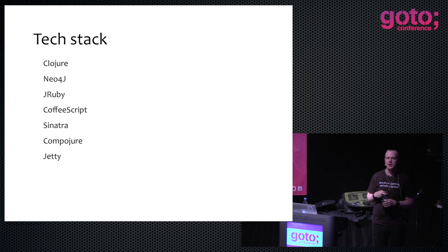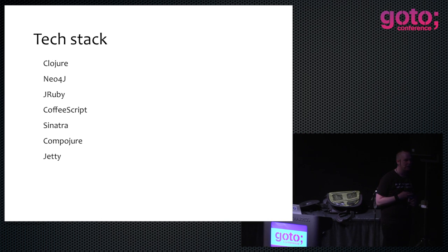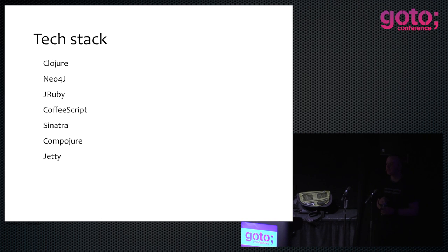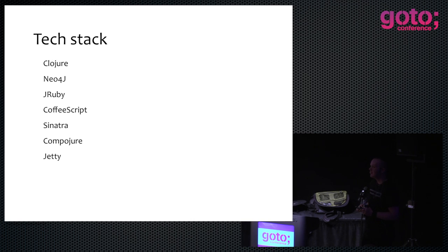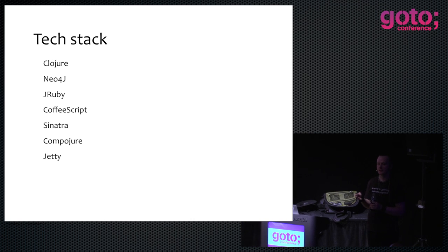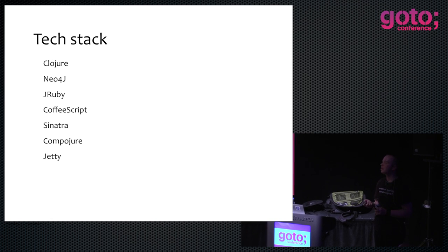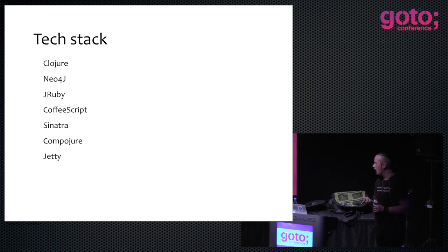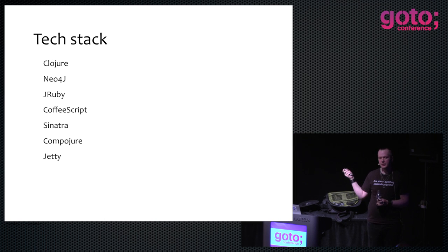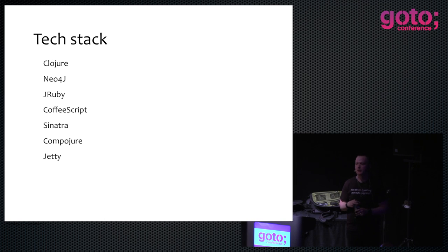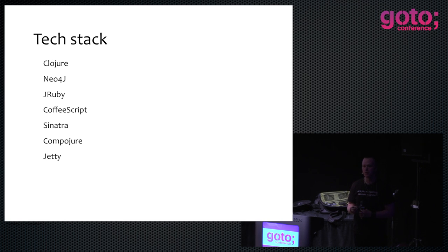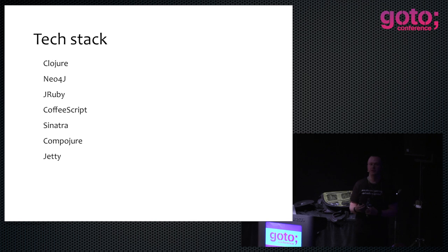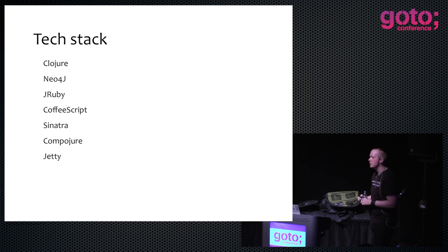We used a lot of different technology. The primary tech stack — where most of the code was written — was Clojure. The graph database was Neo4j. We used JRuby — we actually wrote Ruby but deployed it on JRuby. It turned out that for the things we were doing, JRuby was between 10 and 20 times faster than regular Ruby. So we felt like that was a good choice.